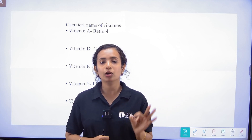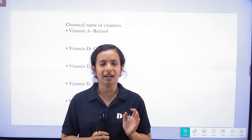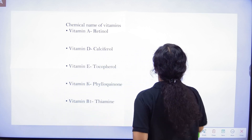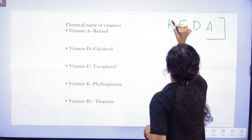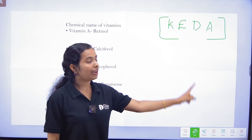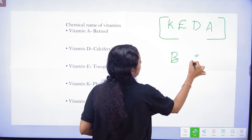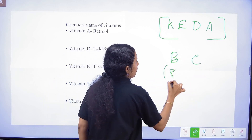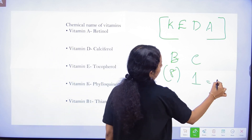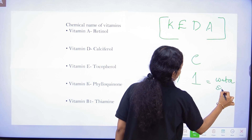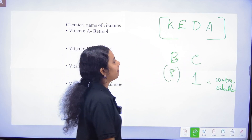If a vitamin dissolves in fat, we call it fat-soluble. There are four fat-soluble vitamins: A, D, E, and K. For the water-soluble group, we have B-complex and vitamin C.